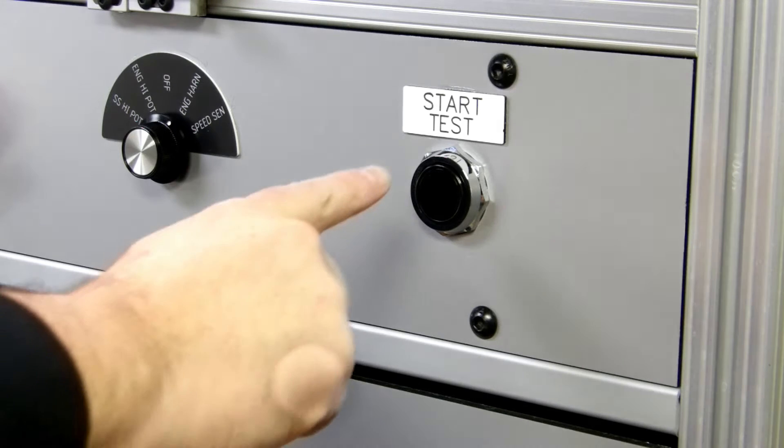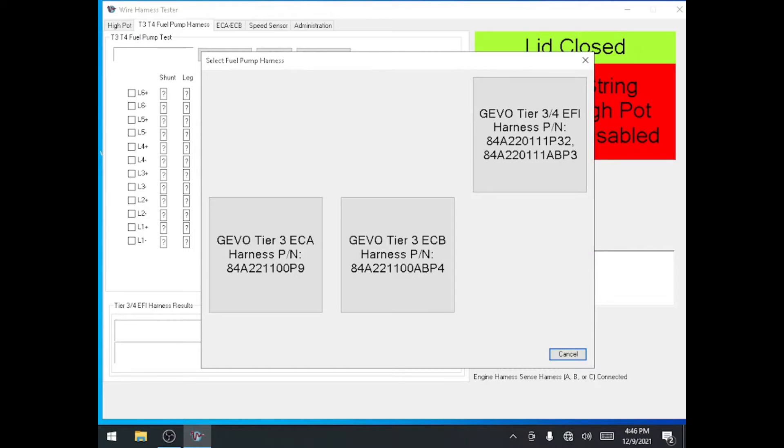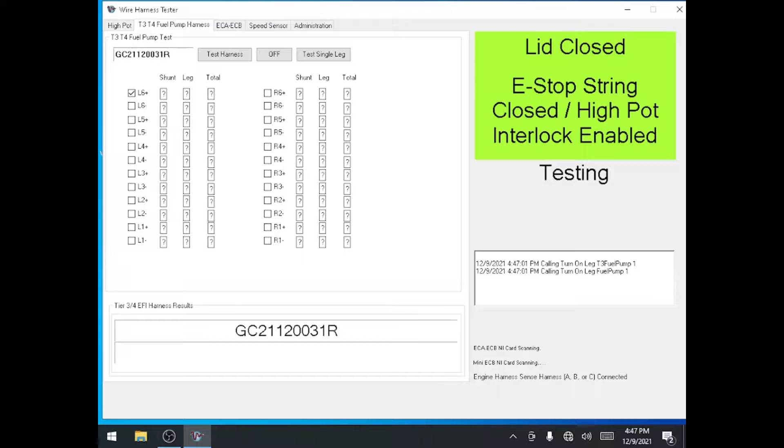Press the start button beside the selector switch to start a test. The software will ask which harness you want to test. Tap the EFI harness button on the test software screen. During the test, each wire will be tested for resistance to check for integrity.